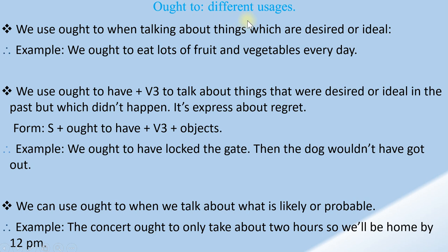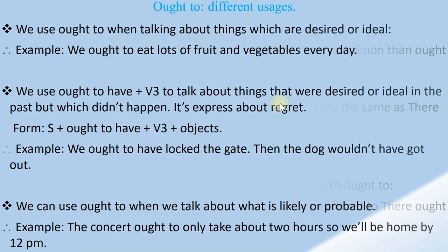There are different uses of 'ought to'. We use 'ought to' when talking about things which are designed or intended. Example: 'We ought to eat a lot of fruit and vegetables every day.' We use 'ought to have' + past participle (verb 3) to talk about things that were designed or intended in the past but which didn't happen.